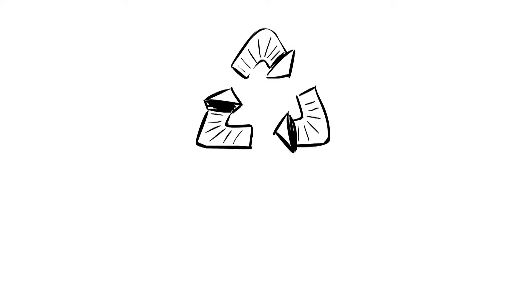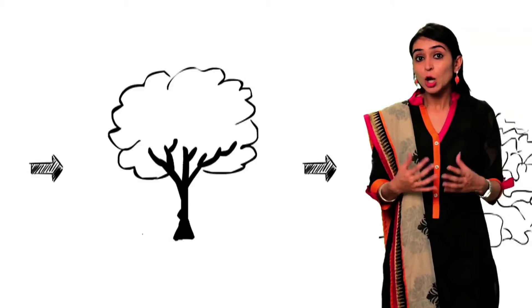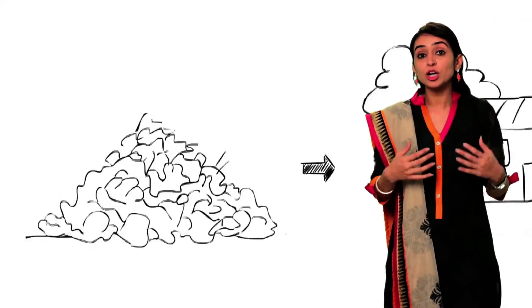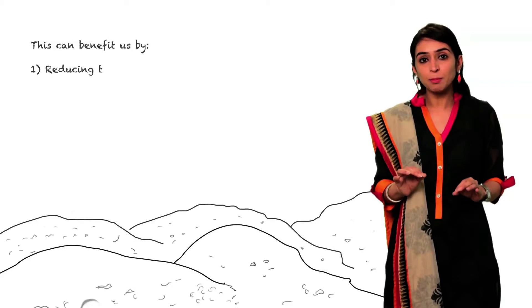So, we need to follow the three simple R's. If we would have collected this organic waste separately, we could have converted this into one of the most efficient compost for agriculture. Due to this, the amount of garbage collected for dumping would be lessened.